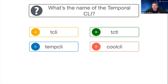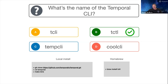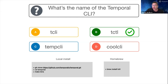If you picked B, tctl, you were right. You can install tctl two ways: either a local install by cloning our Temporal git repository and running make bins, or if you're on Mac with Homebrew, you can install it with brew install tctl.